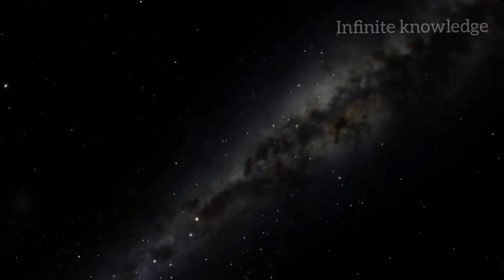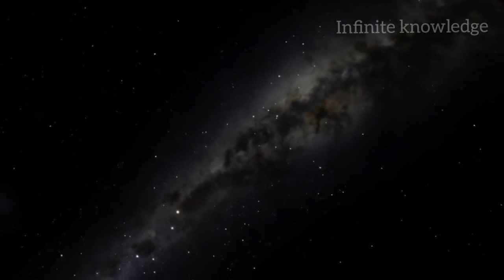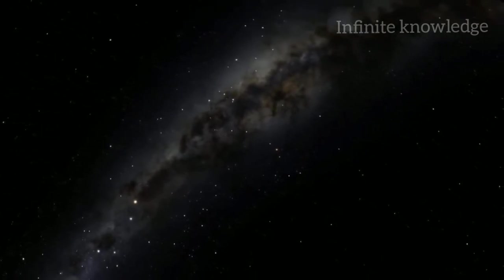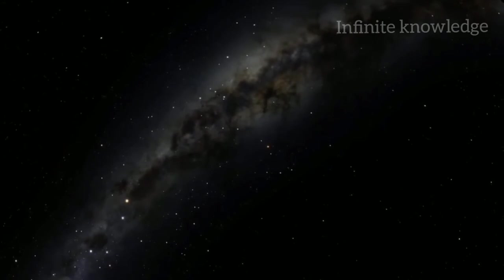We live in the disk of a barred spiral galaxy of over 200 billion stars. Its spiral arms stretch around us, creating the hazy Milky Way band.